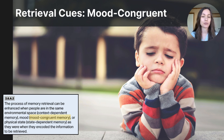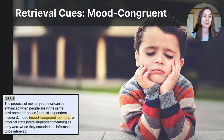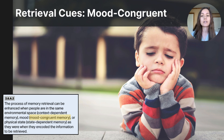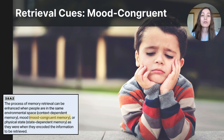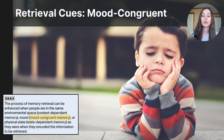Sometimes our emotional state can act as a retrieval cue. Have you ever felt really irritated, and then memories of other things that irritate you start to pop into your mind? Or felt really sad, and then sad memories come to mind? These are examples of mood-congruent memory, which is when your emotional state acts as a retrieval cue. The word congruent means similar to or in line with — so mood-congruent memory means that when you are in the same or similar emotional state as when you encoded a memory, you're more likely to remember it.